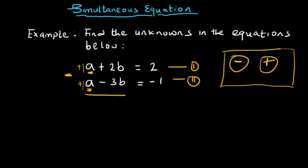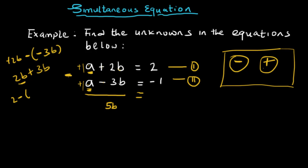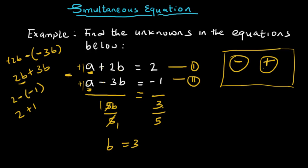This would be plus 2b minus minus 3b. So we have plus 2b, then minus, then another minus — so we put it in brackets: minus(−3b). Minus times minus is plus, so 2b plus 3b gives us 5b. On the right-hand side, we have 2 minus minus 1, which is 2 plus 1, giving us 3. So 5b equals 3. Dividing both sides by 5, b equals 3 over 5.